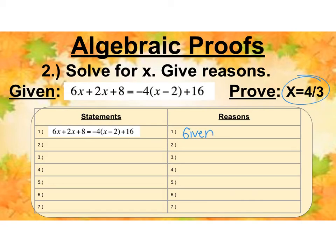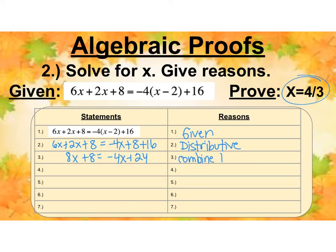I do see the parentheses so I'm going to go ahead and multiply that and notice that I am only changing one thing at a time. So negative 4X plus 8 plus 16. The reason is the distributive property. Now I'm going to combine like terms and it's okay if you do it on both sides. So I'm going to have 8X when I combine my X's plus 8 and then negative 4X plus 24. The reason would be combining like terms or you could say the word simplify.